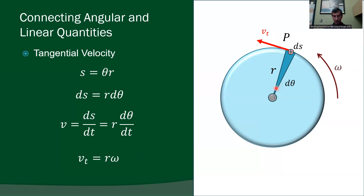That makes sense: if you're close to the axis of rotation, your velocity isn't going to be very large. As you go further and further away, your radius becomes larger, and for the same angular velocity you get a larger tangential velocity. So that connects tangential velocity to angular velocity.